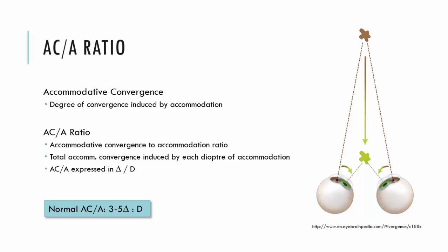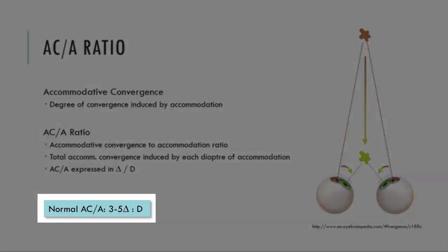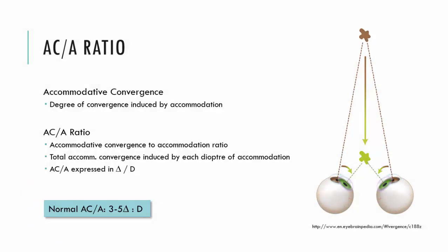As part of revision, let's go over what the ACA ratio is. The ACA ratio is the total amount of accommodative convergence a patient undertakes for each diopter of accommodation. We expect that for individuals with a normal ACA ratio, they will do somewhere between three to five prism diopters of accommodative convergence for every diopter of accommodation.